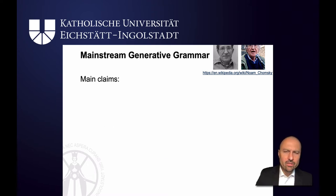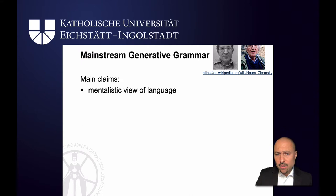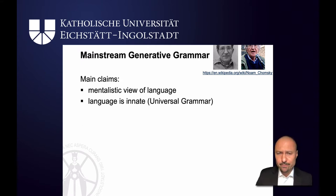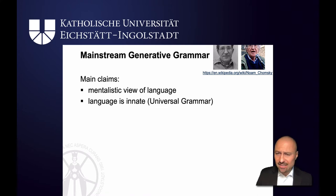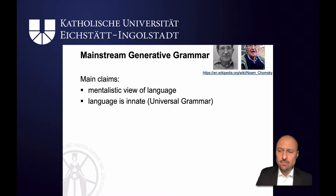What are the main claims of generative grammar? Well, generativists take a mentalistic view of language, so they focus on language in the mind. They argue that language is innate — so in your genes there is a universal grammar, and because of that kids all around the world can learn languages so quickly and in a similar fashion.